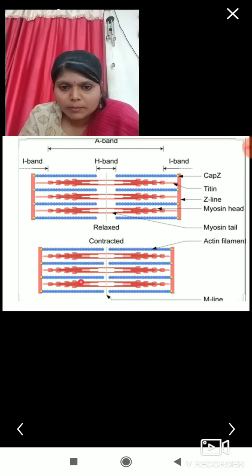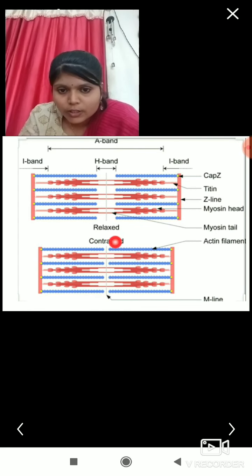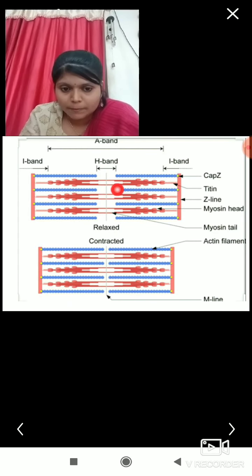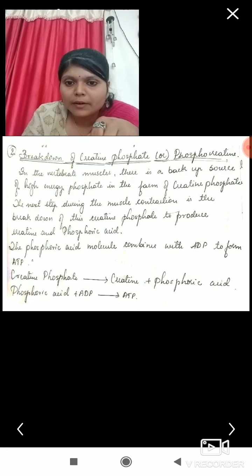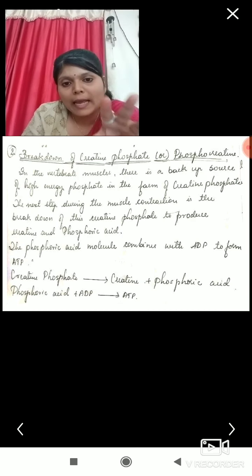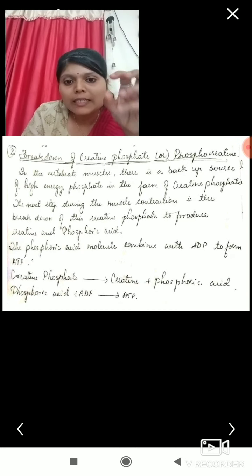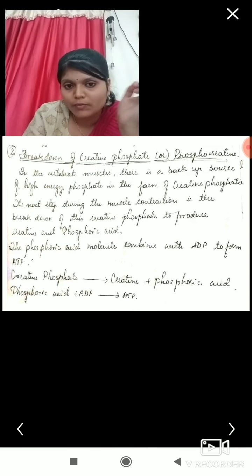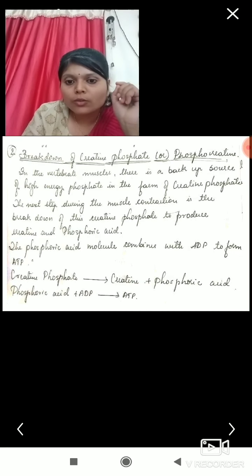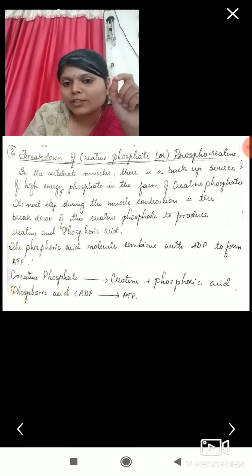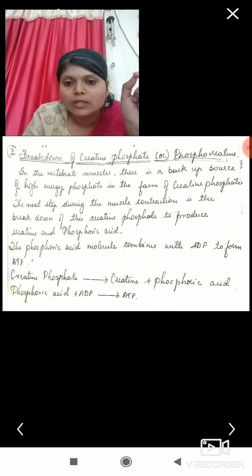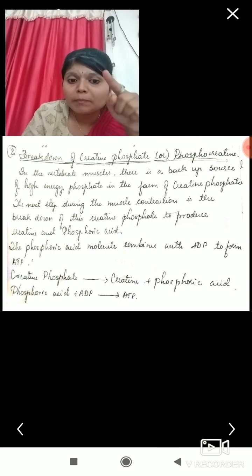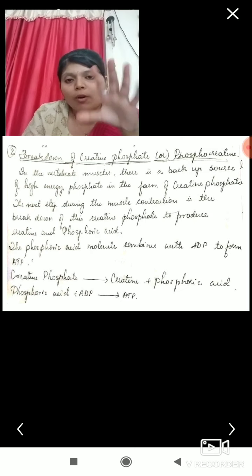During contraction there is utilization of ATP. In the relaxed state, the next source of energy comes into play. In certain vertebrate muscles there is a backup source of high-energy phosphate in the form of creatine phosphate. The next step during muscle contraction is the breaking down of creatine phosphate to produce creatine and phosphoric acid.